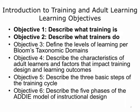The learning objectives for the Introduction to Training in Adult Learning unit are: 1. Describe what is training. 2. Describe what trainers do. 3. Define the levels of learning per Bloom's taxonomic domains. 4. Describe the characteristics of adult learning. 5. Describe the three basic steps of the training cycle. 6. Describe the five phases of the ADDIE model of instructional design.